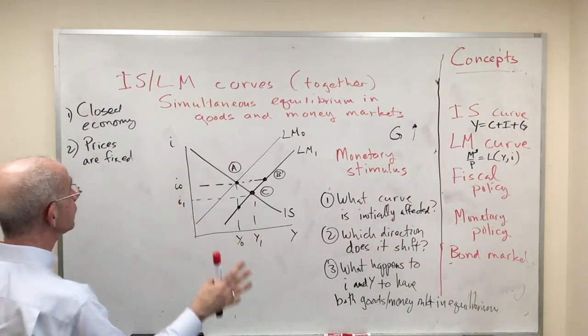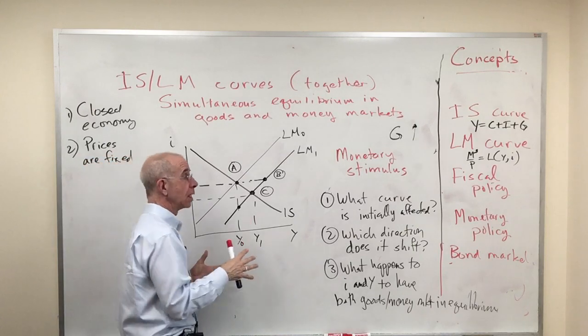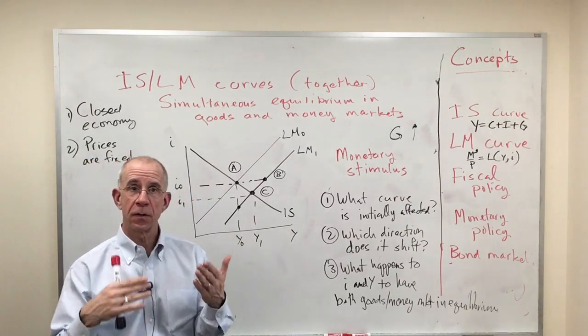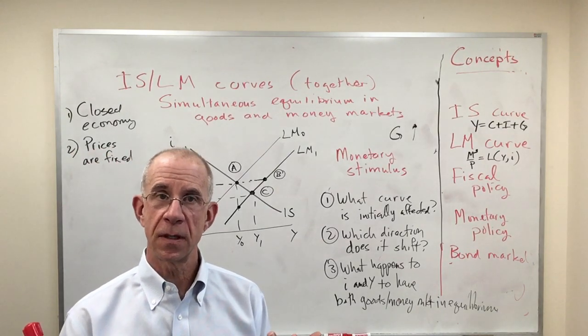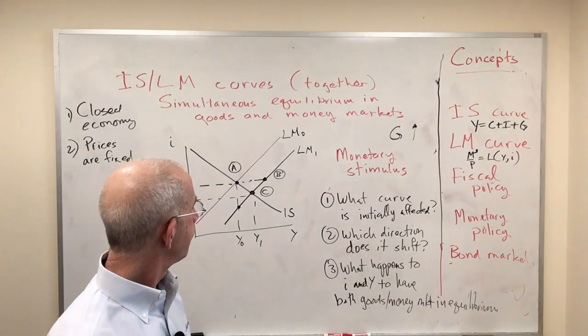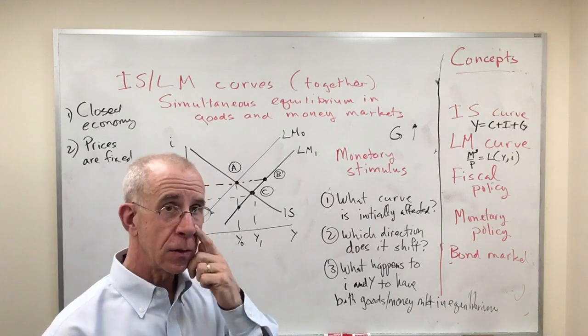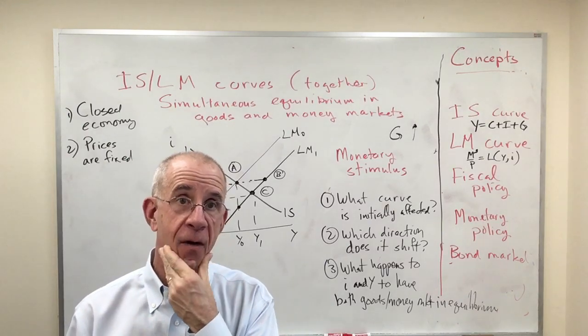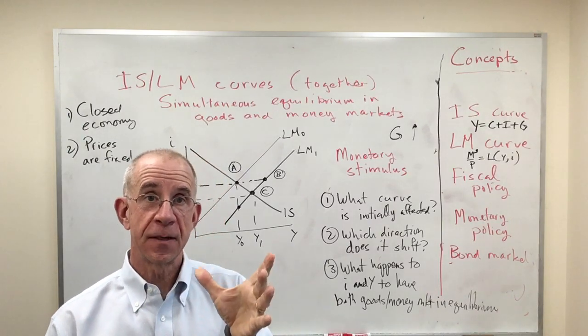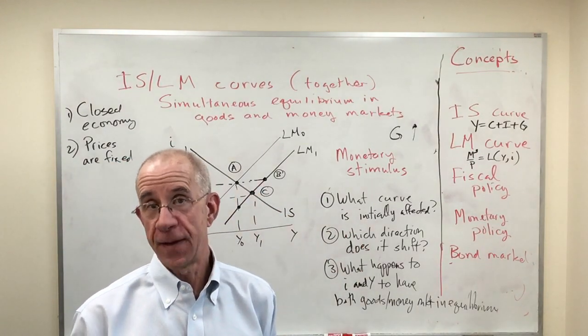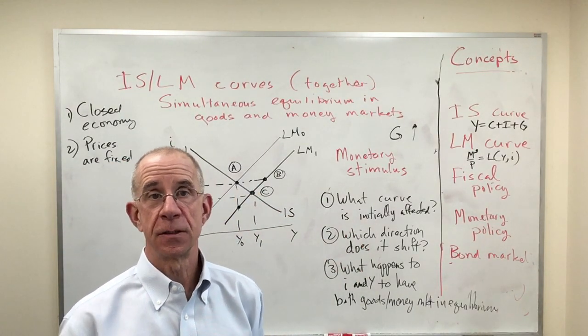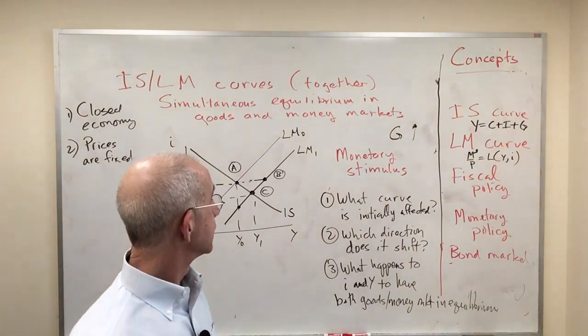So here's a combination of how you might use the IS and LM curve together. There are lots of different types of analyses that you can do with this. It's sort of an alternative to looking at aggregate demand and aggregate supply. The big difference here is that we're keeping the price level fixed, at least in this initial take of IS-LM.